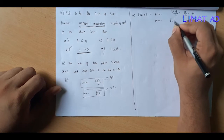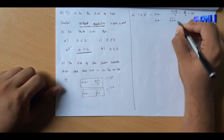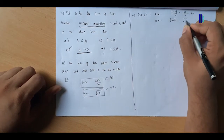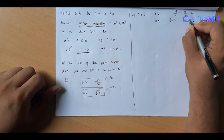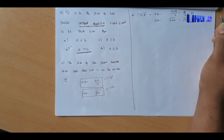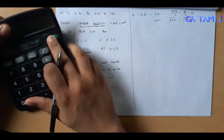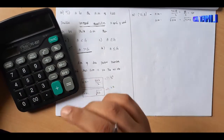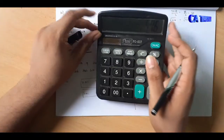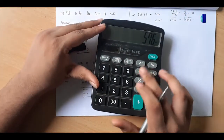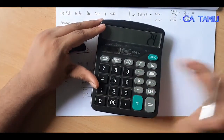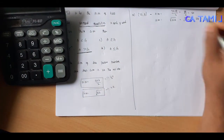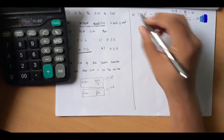For GM: A into B = 72 into 8 = 576. The square root of 576 is 24. The option is A — the numbers 72 and 8 satisfy both conditions.